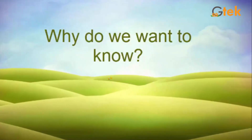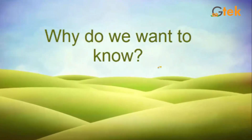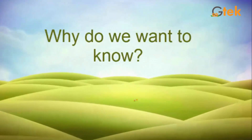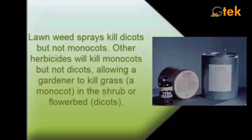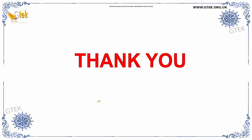So now, why do we want to know all these things? Because lawn weed sprays kill only dicots and herbicides will only kill monocots. The gardener should know about monocots and dicots. Thank you for watching, from GTIC.